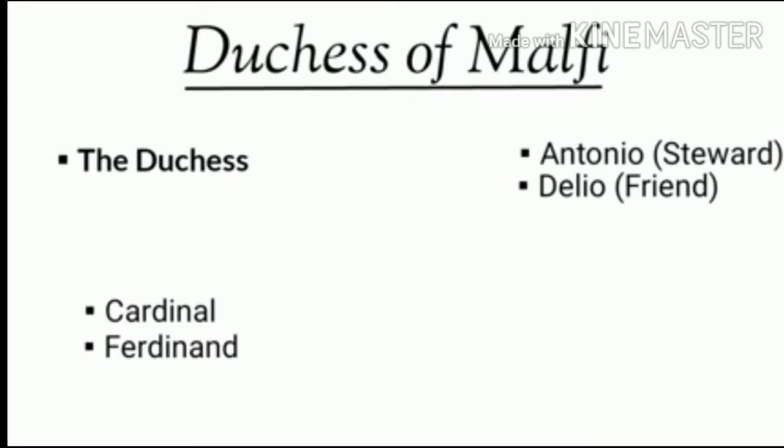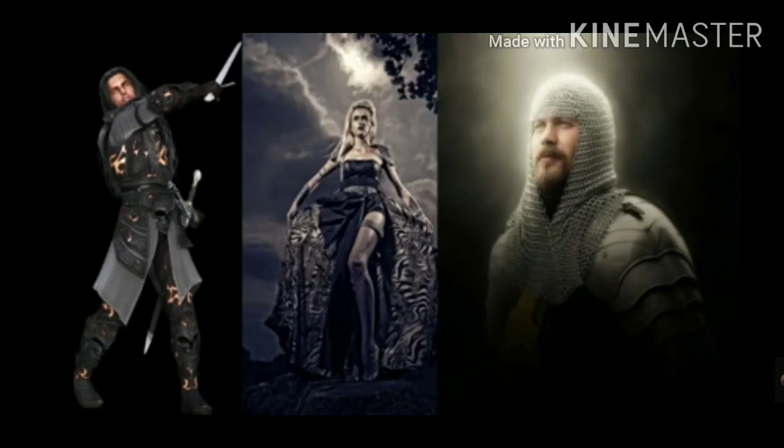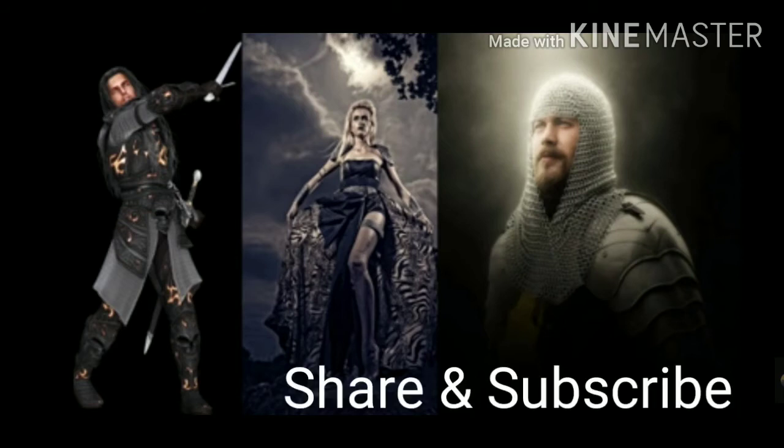The Duchess is a young widow and the ruler of the Italian town of Amalfi. Her chief steward Antonio had just returned from a visit to the French court. Bosola, a murderer and former employee of her brother the Cardinal, had just returned from his punishment. Soon, Duke Ferdinand, the Duchess's other brother, enters with his whole retinue.